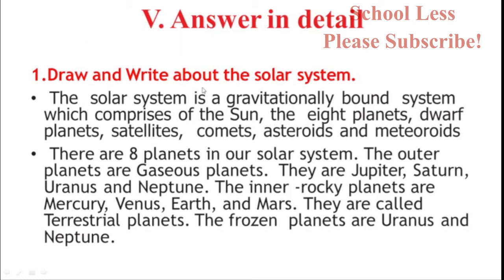Answer in detail — Draw and write about the solar system. The solar system is a gravitationally bound system which comprises of the Sun, the eight planets, dwarf planets, satellites, comets, asteroids and meteoroids. There are eight planets in our solar system. The outer planets are gaseous planets — Jupiter, Saturn, Uranus and Neptune. The inner rocky planets are Mercury, Venus, Earth and Mars. They are called terrestrial planets. The frozen planets are Uranus and Neptune.